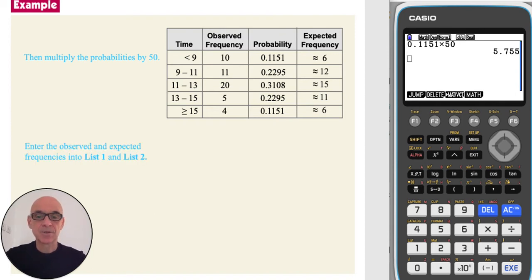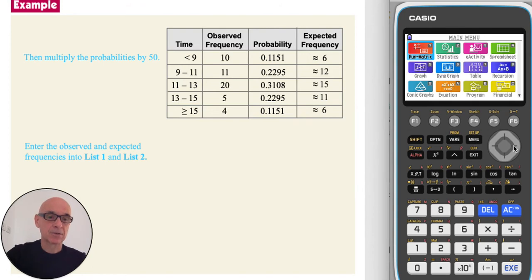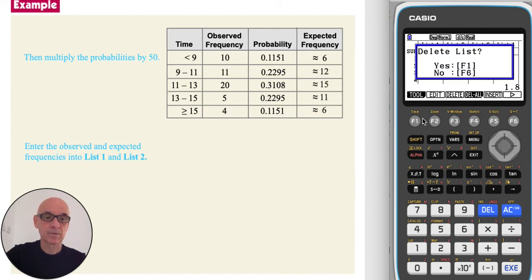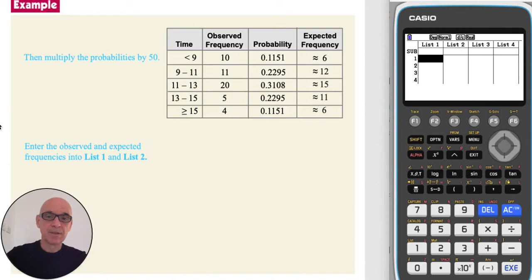Next to enter the observed and expected frequencies into list 1 and list 2 on the calculator. From the menu, go back to Statistics and then press F6. Delete the lists that are there by pressing F4 and confirming with F1, and scrolling across and repeating that process, deleting the contents of the lists.